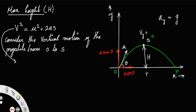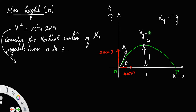Gravity acts in the downward direction, so we have to put a minus sign. Since gravity is along the negative y-axis — that is, from top to bottom — it keeps on reducing u sin theta. At the highest point S, the velocity will be 0. That is the reason why the projectile turned back.